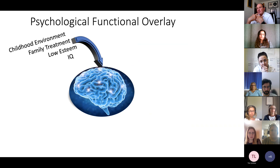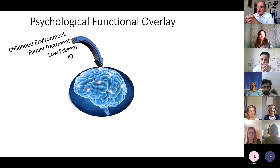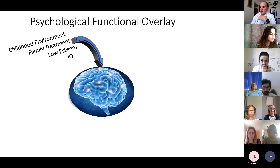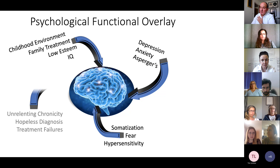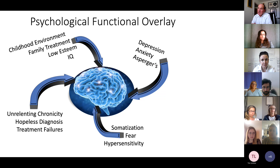I'm not really qualified to talk too much about psychology, but psychological functional overlay is certainly considered by an awful lot of people to be very important. It starts with childhood environment — how the family treated the patient, what abuse took place, their level of esteem, and sometimes their IQ. This develops into depression; anxiety may be associated with things like Asperger's. Somaticization develops, with increasing fear in a vicious circle and increasing hypersensitivity. Unrelenting chronicity in the presence of a hopeless diagnosis and treatment failures aggravates this still further.